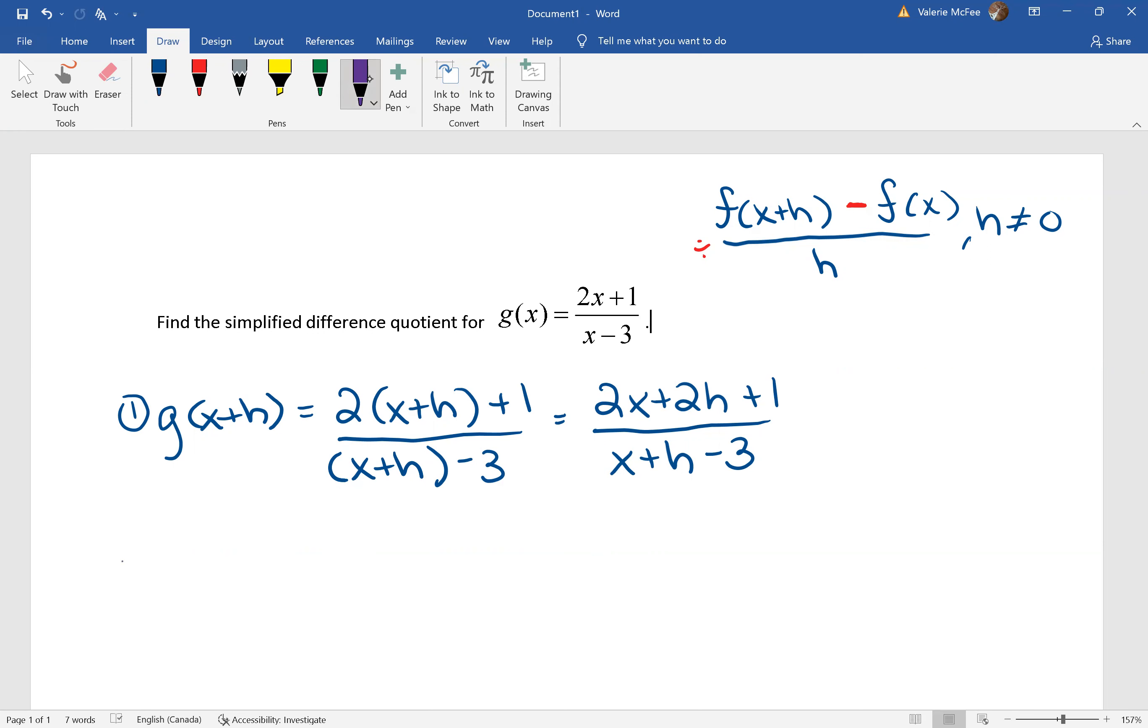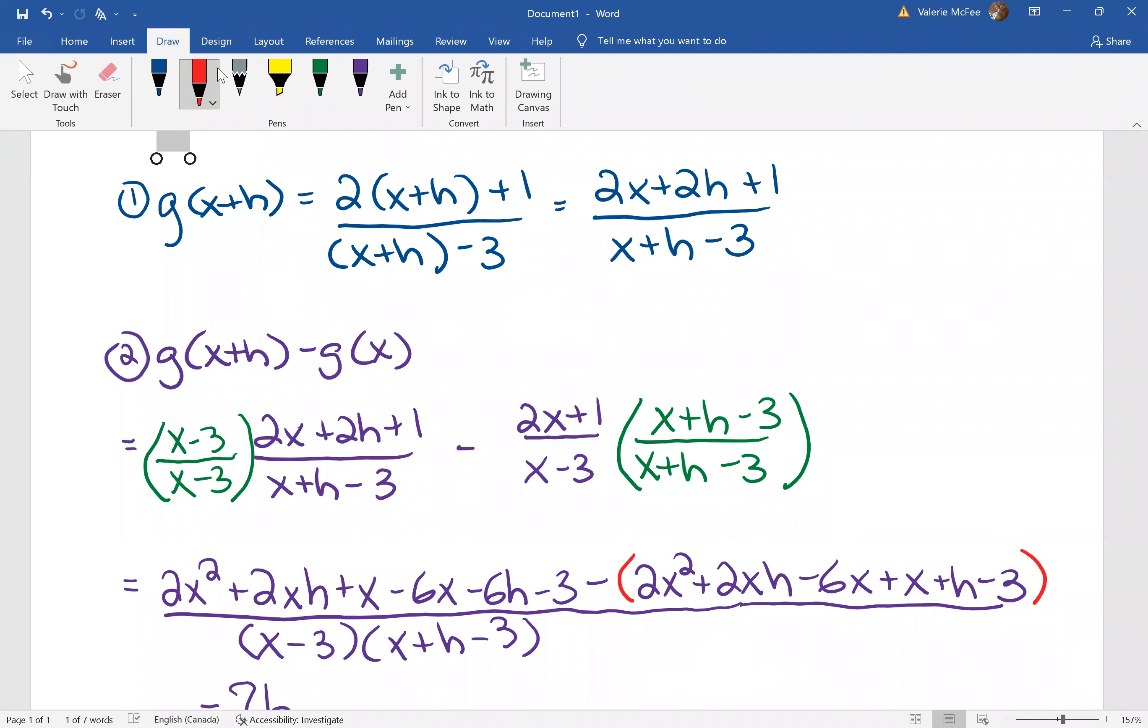Our second step is to find that entire numerator. The g(x+h) minus g(x). Give that a try. So you needed to find your lowest common denominator. We had two factors, x plus 3 and x plus h minus 3. We needed to multiply each expression by its missing factor. The first term was missing x minus 3. The second term was missing x plus h minus 3. And we're multiplying the numerator and the denominator. You open the brackets and remember that you were subtracting all of this.